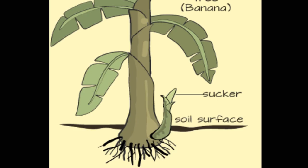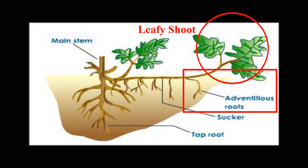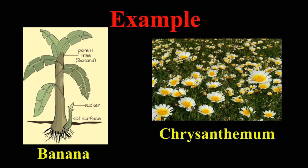Sucker: Sucker arises from the basal underground part of the main stem. It grows horizontally for a distance under the soil and then emerges above the ground. It develops a leafy shoot and adventitious roots before separating from the mother plant. Chrysanthemum is one of the plants which has a modified stem as a sucker.